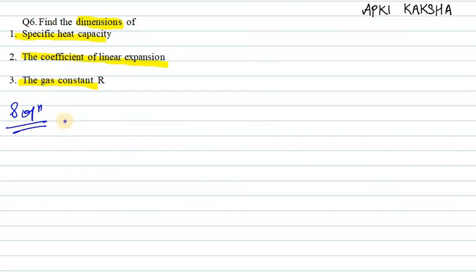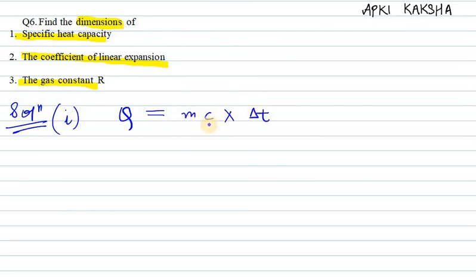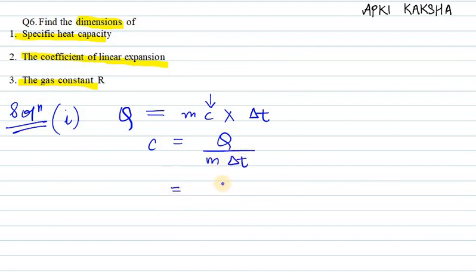Let's start with the first one: specific heat capacity. You must be familiar with heat energy Q, and the formula is Q = mcΔT, where m is the mass of the body, c is the specific heat capacity, and Δ is the change in temperature. Using cross multiplication, we get c = Q / (m·ΔT).